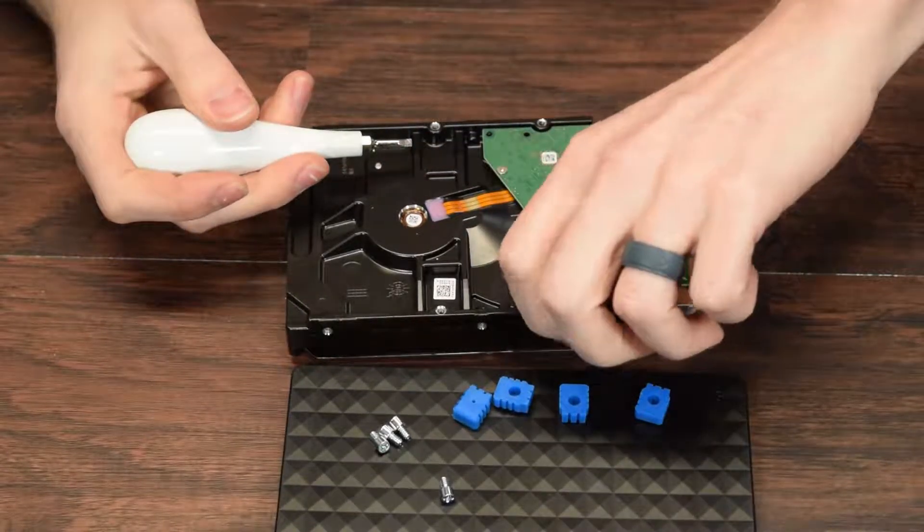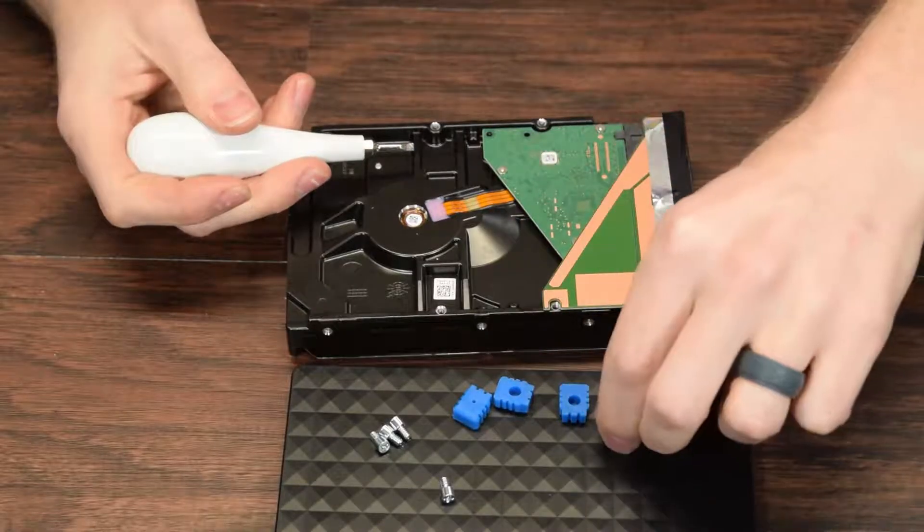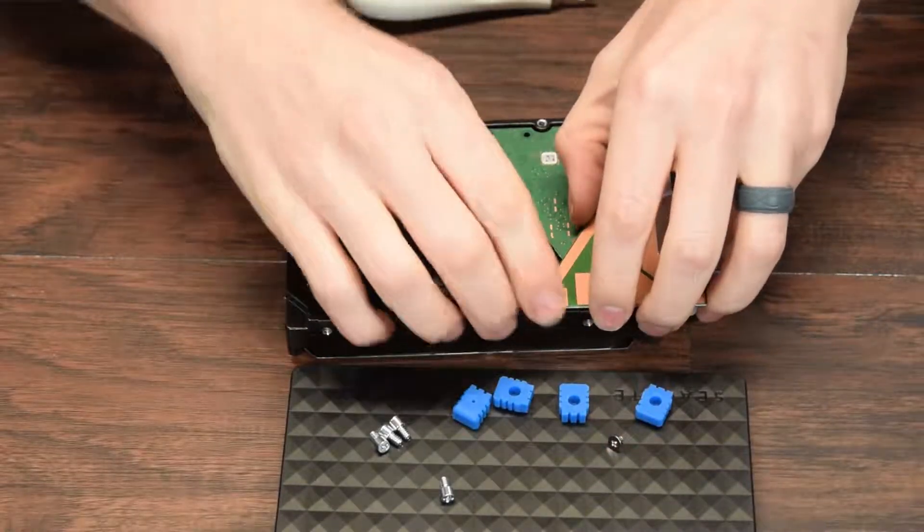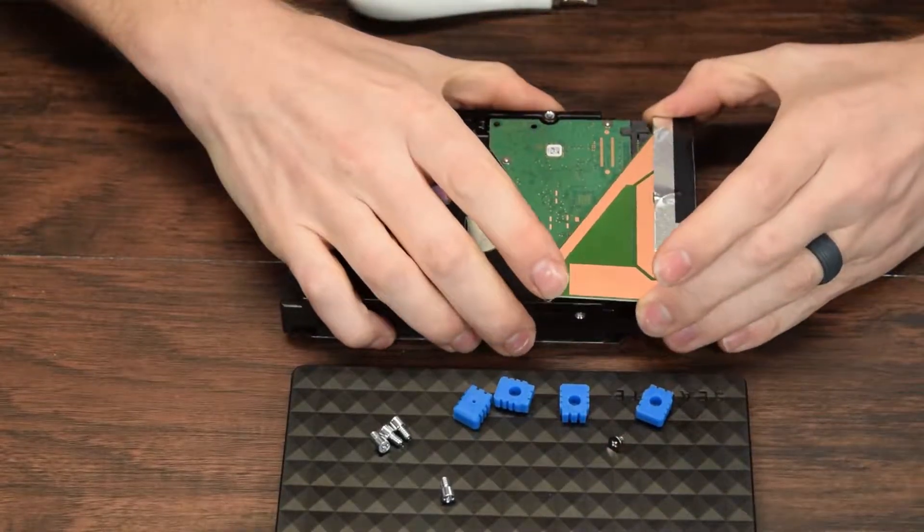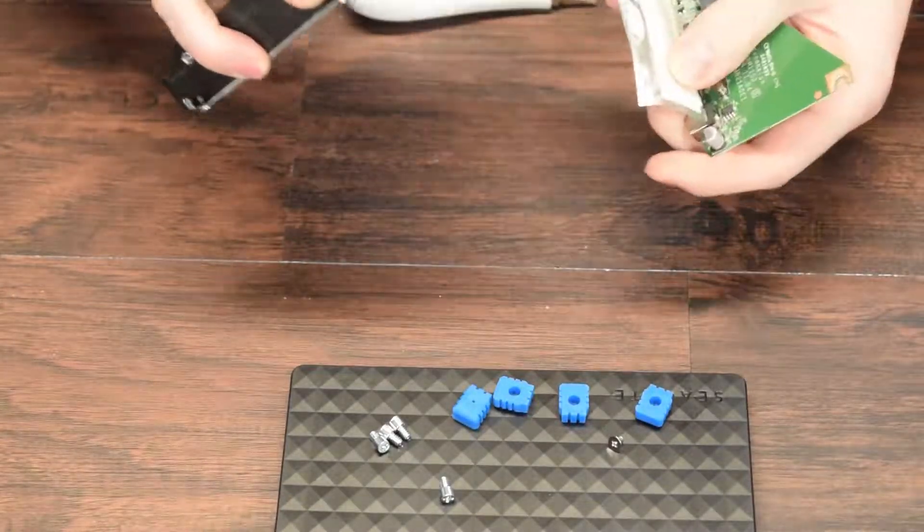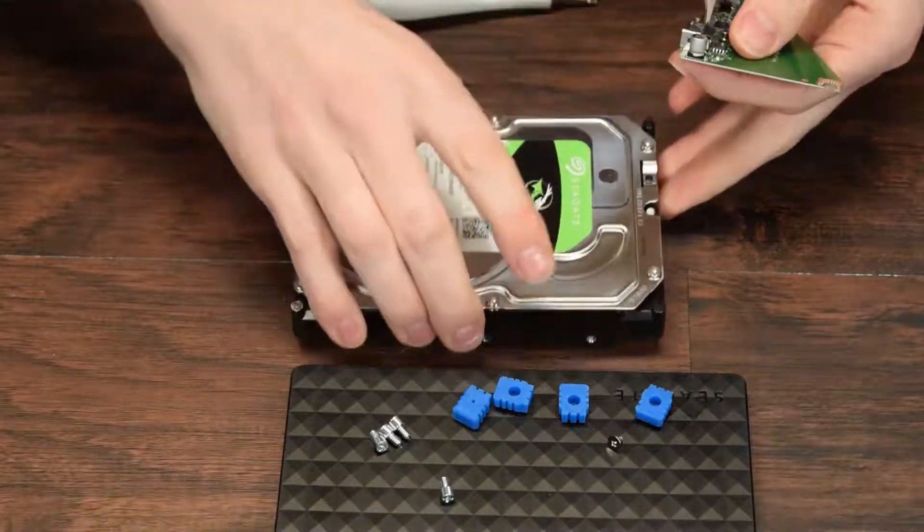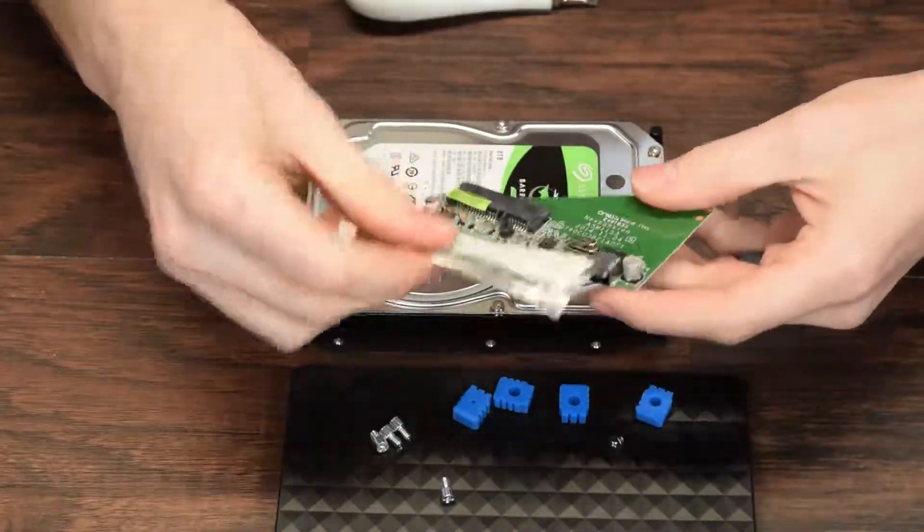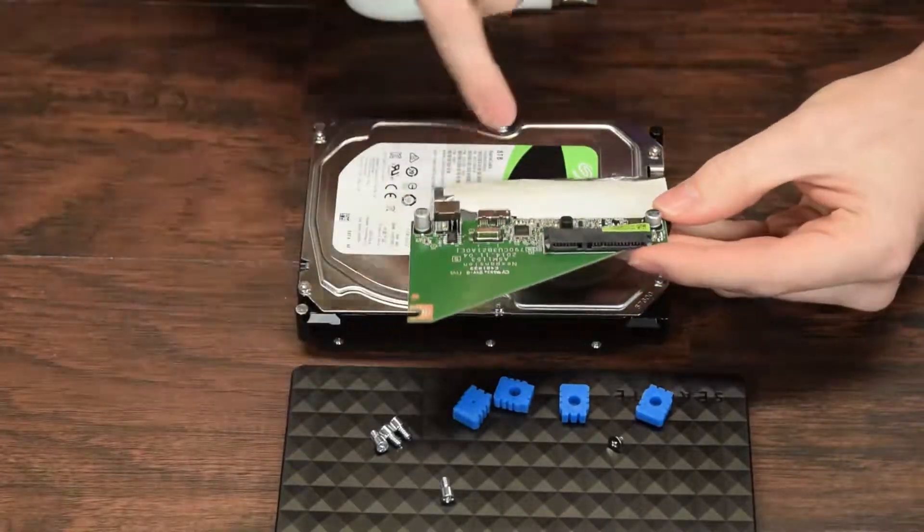There's just one little screw here that holds on the board, and then you can wiggle the board off and peel off the tape. There you go. You have your full standard SATA on the board. Pretty simple, as you can see.